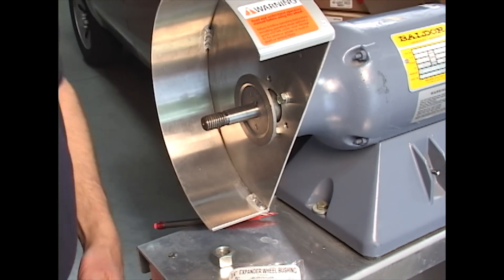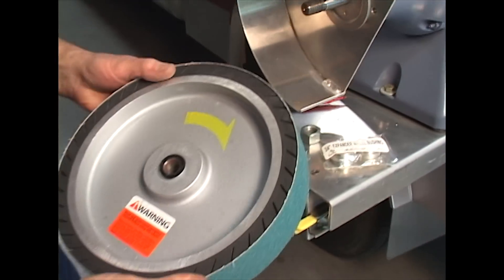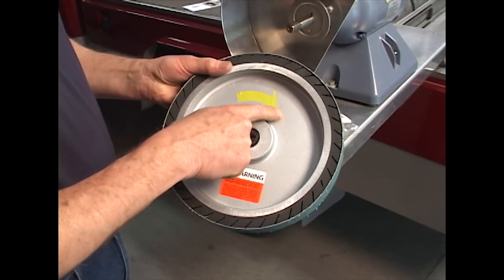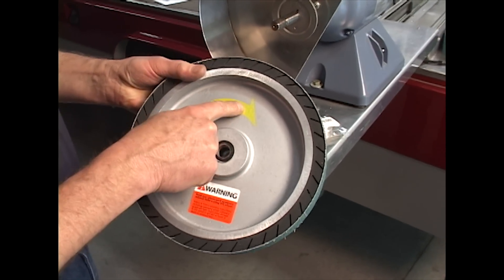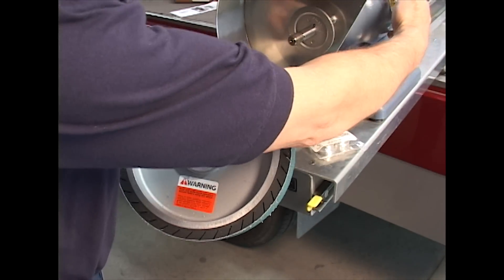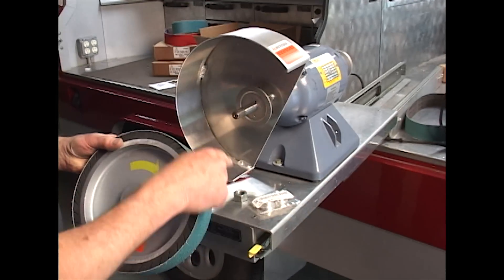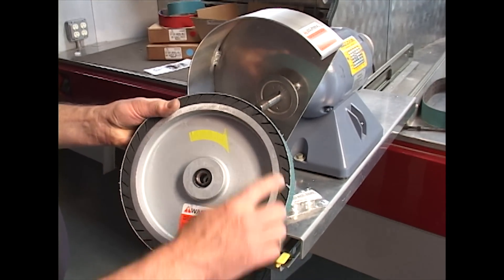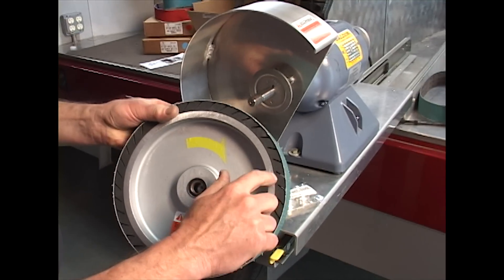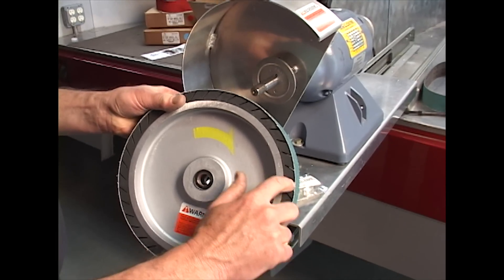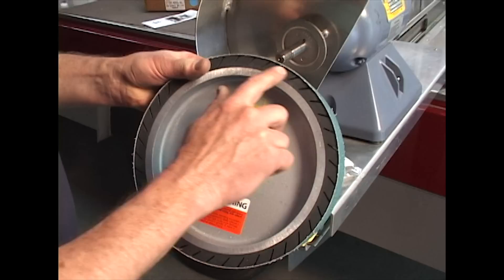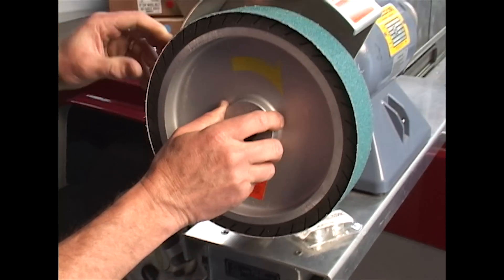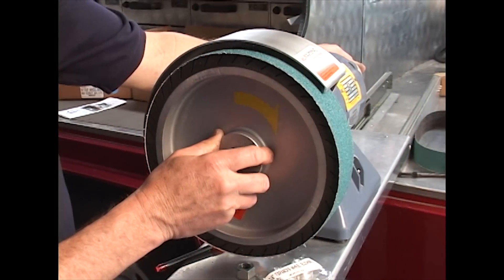Next step, we will mount the expander wheel and you will notice there's a rotation direction. This is the front of the unit, so the shaft will spin clockwise and that's the rotation you want to mount it on. Notice also the angle of the lamella of the wheel. That's the correct direction to mount it. We'll slide that on.